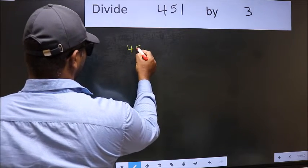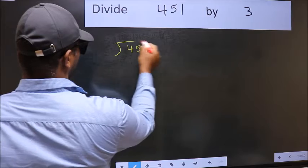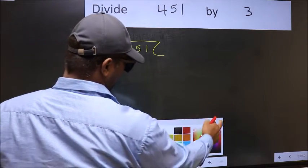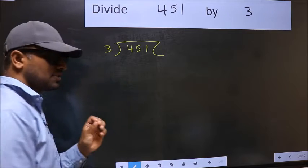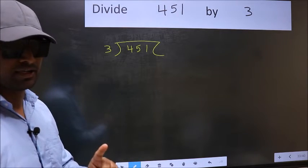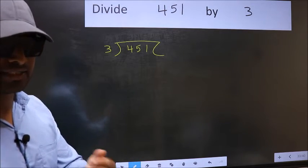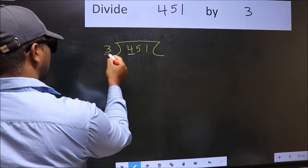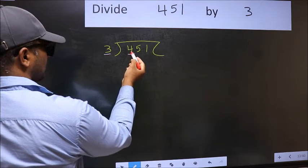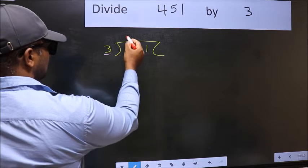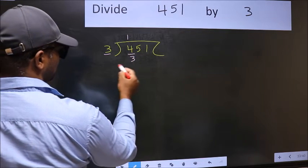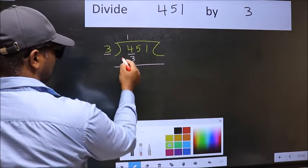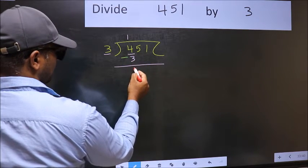451 and 3 here. This is your step 1. Here we have 4 and here 3. A number close to 4 in the 3 table is 3 ones = 3. Now we should subtract: 4 minus 3 = 1.